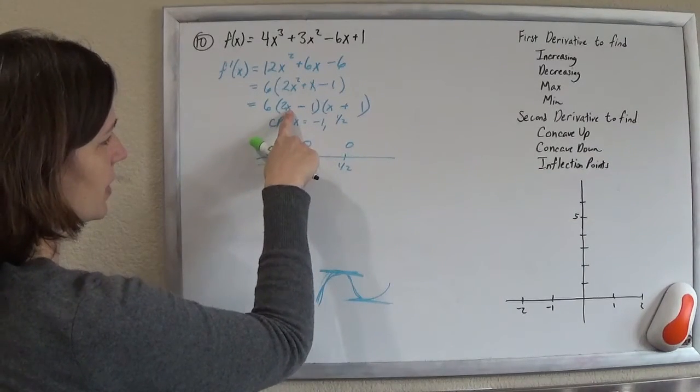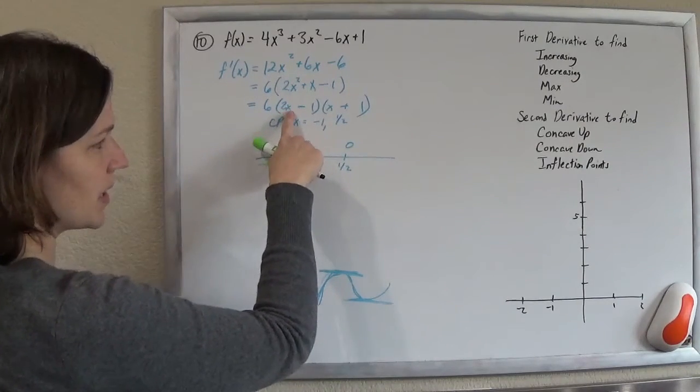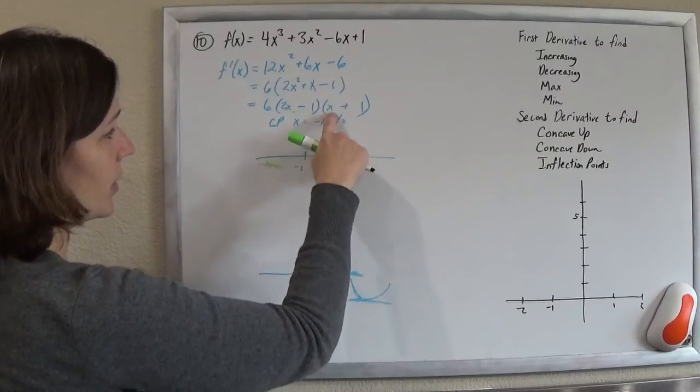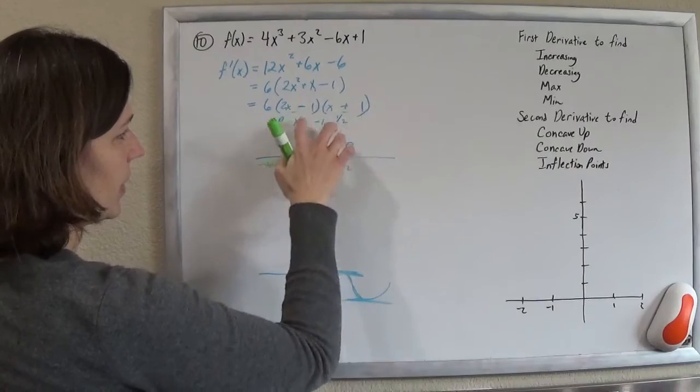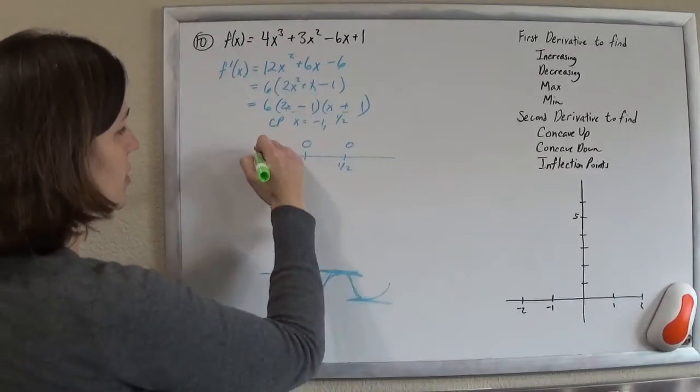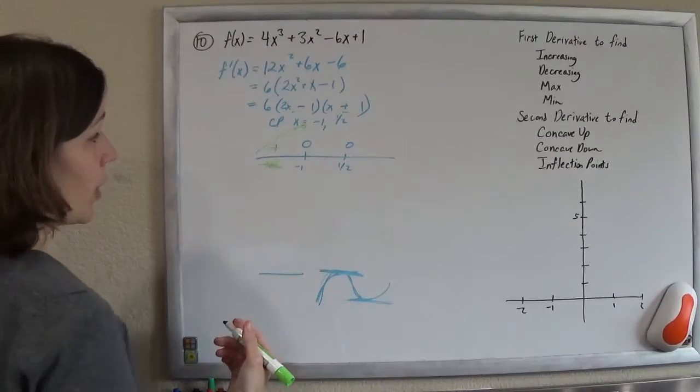So if I plug in negative 100 into this, the 6 is positive, so he's not doing anything. 2 times negative 100 is negative 200 minus 1, it's still certainly negative. Negative 100 plus 1 is negative. Negative times a negative is a positive. So since our derivative is positive, the slope of our tangent line is positive, and therefore our function is increasing.